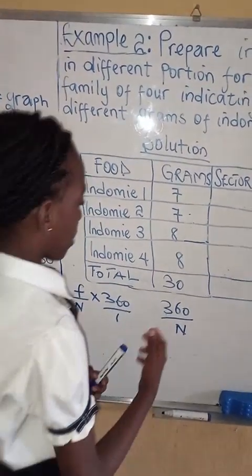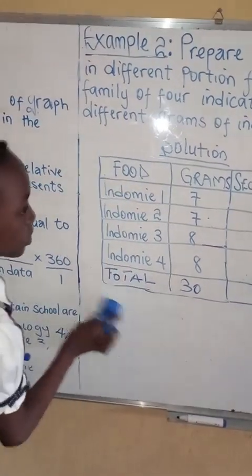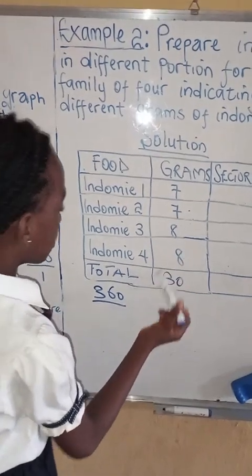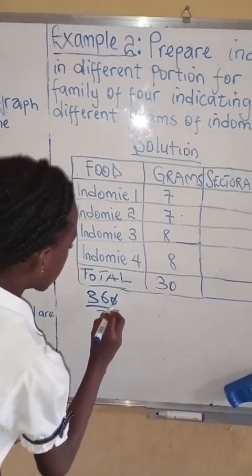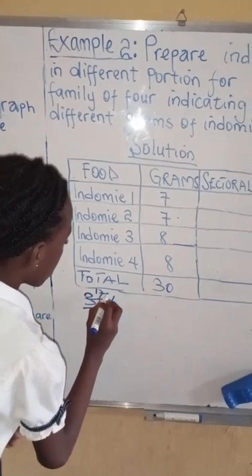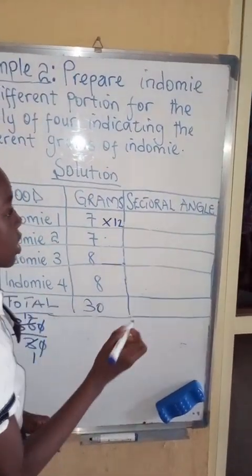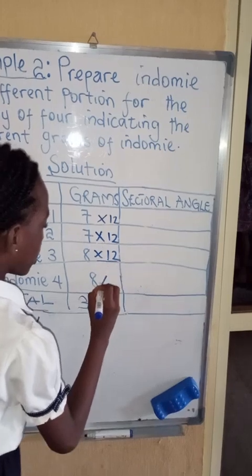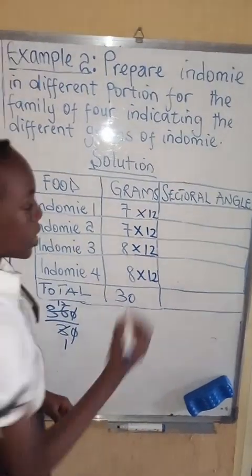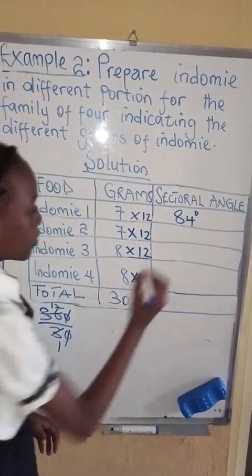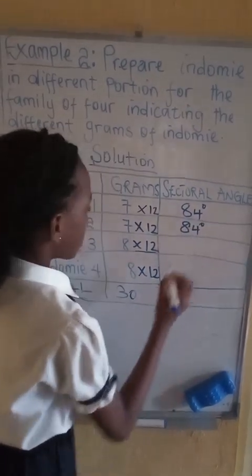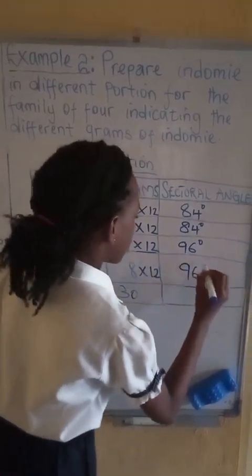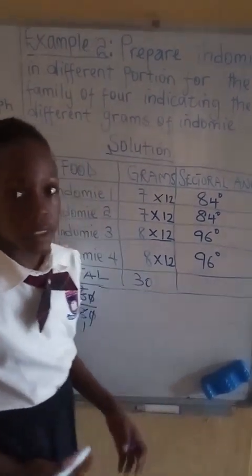360 over the total sum of the grams is 30. 360 cancels here, 3 cancels here, 1 and 12. So I'll multiply each of them by 12 to get the sectoral angle. 7 times 12 is 84 degrees. 7 times 12 is 84 degrees. 8 times 12 is 96 degrees. 8 times 12 is 96 degrees.